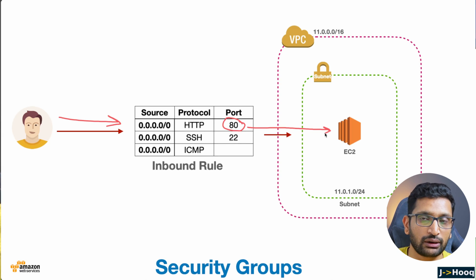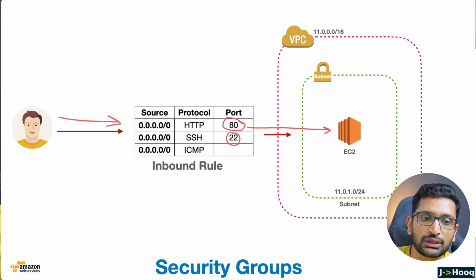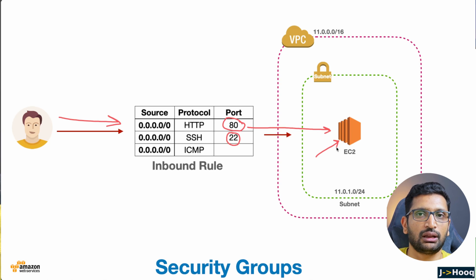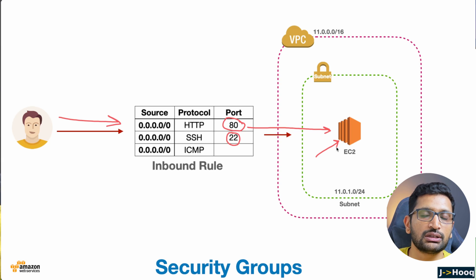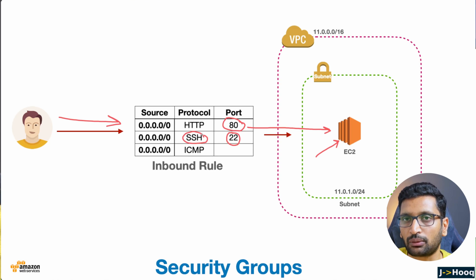There is one more port I have enabled, which is port 22. Port 22 is used for SSH, or logging into your EC2 instance. Since this EC2 instance is Linux-based, we need to do certain checks like accessing the instance to check logs or install packages. For that reason we need to enable SSH so that you can access that EC2 instance from PuTTY or from your terminal.